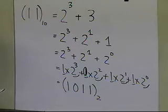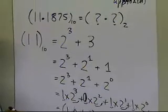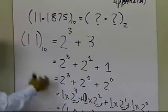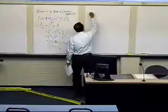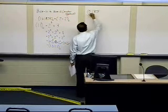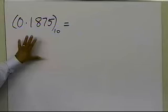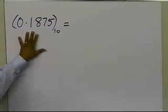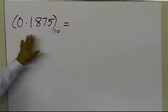Now let's look at how we handle the fractional part, which is 0.1875. We want to find the equivalent binary representation using the same philosophy. For 0.1875, we need to find the lowest negative power of 2 — that is, 2 raised to a negative integer — which is part of 0.1875.